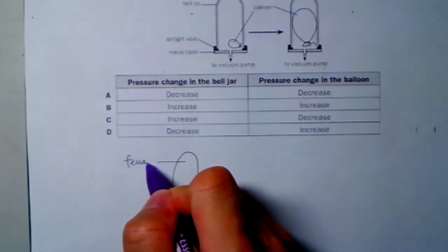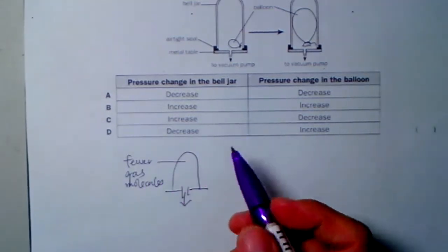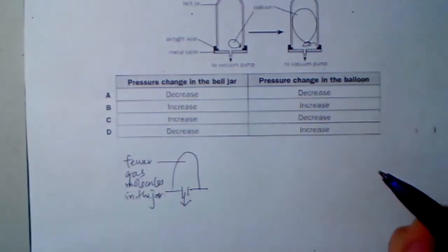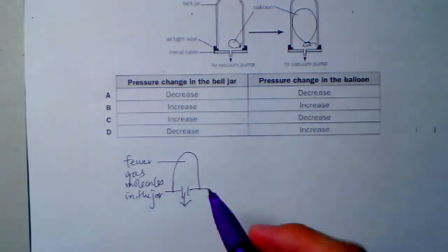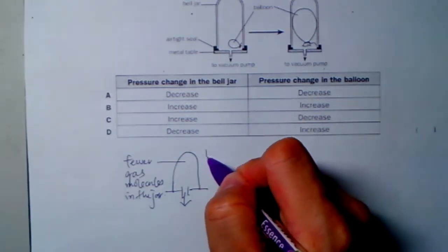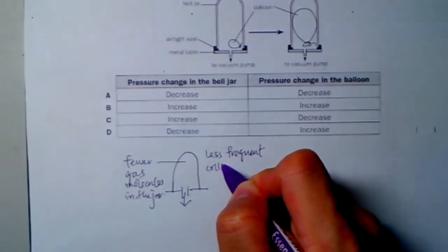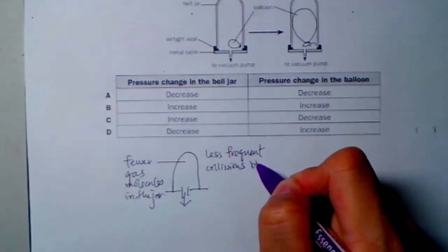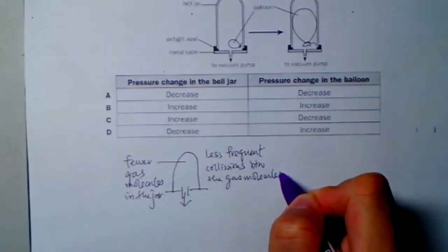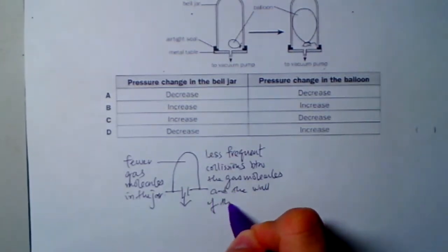There are fewer gas molecules in the jar. As a result, since the total surface area in the jar remains constant, there's less frequent collision between the gas molecules and the wall of the bell jar.